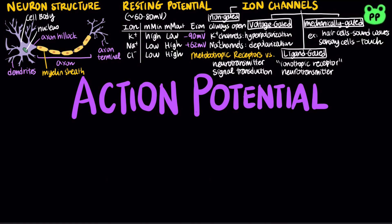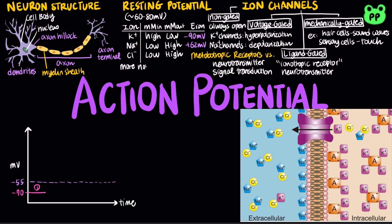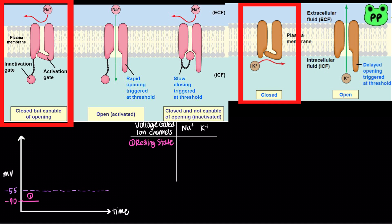An action potential can be broken down into a series of stages. At the resting potential, some non-gated potassium channels are open. Potassium ions flow outside the cell, causing the resting potential to be polarized and closer to the equilibrium potential of potassium ions. But most voltage-gated sodium and potassium channels are closed. During the second stage, a stimulus opens some sodium channels. Sodium ions flow into the cell, depolarizing the membrane. Action potential only occurs when the membrane voltage crosses a particular threshold.